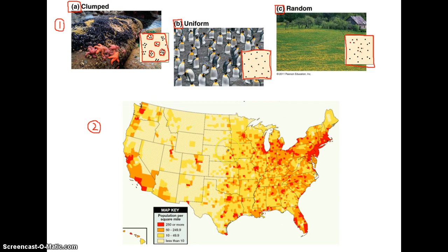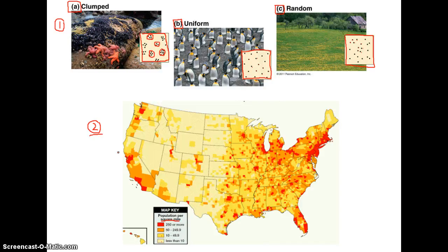This US map uses different colors to show the number of humans per square mile in certain areas. Red regions represent 250 or more people per square mile, dark orange represents 50 to 150 people per square mile, and lighter colors represent lower densities. So density tells us how many individuals live in a certain amount of space.